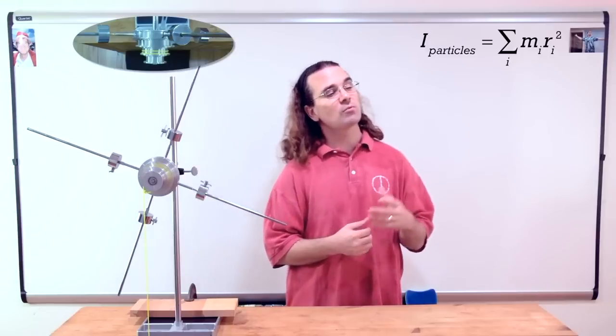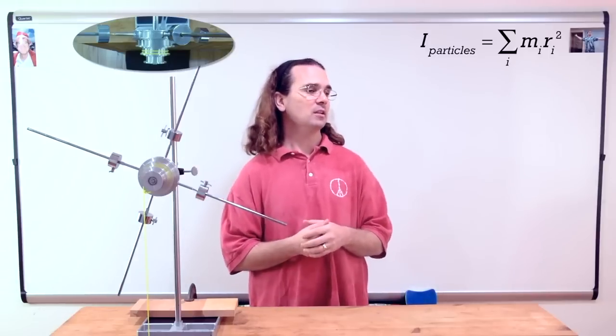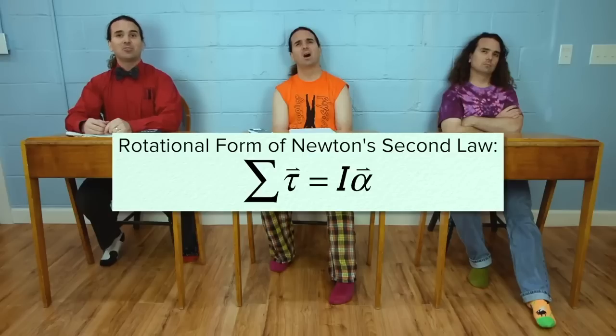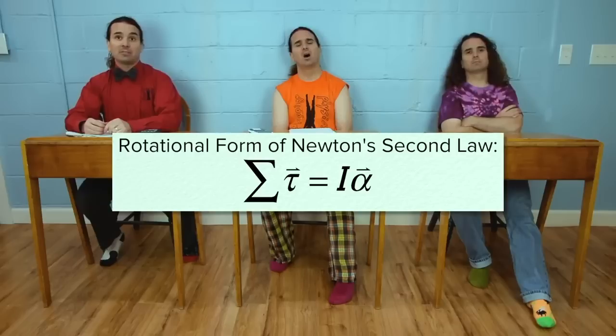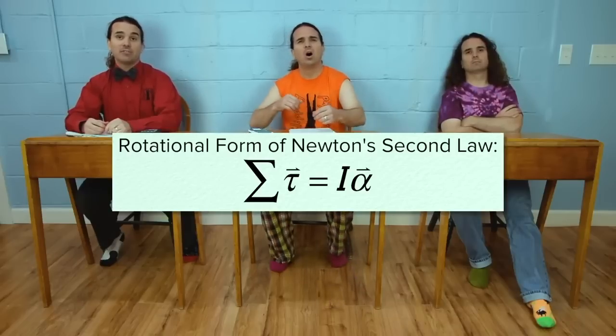What is the rotational form of Newton's second law? Net torque equals rotational inertia times angular acceleration, where both torque and angular acceleration are vectors.